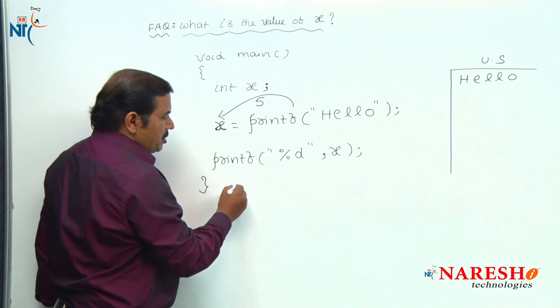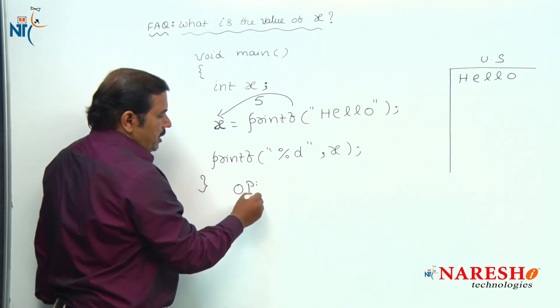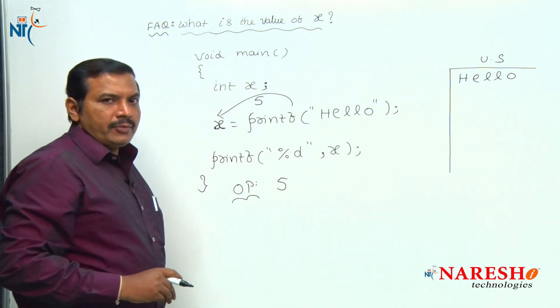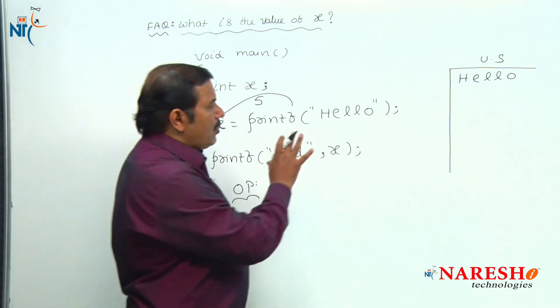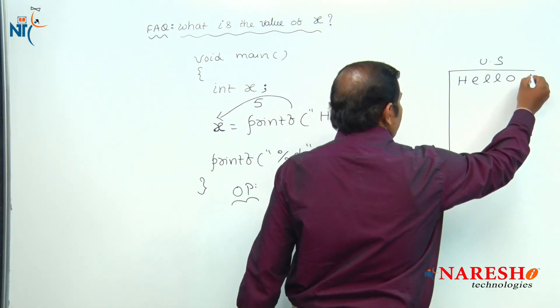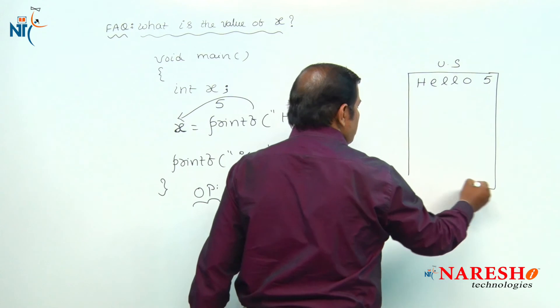Hence, the last printf function prints the x value 5 onto the screen. So actually, the complete output of this code is hello as well as 5, printed onto the screen.